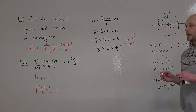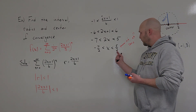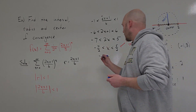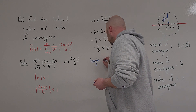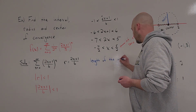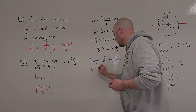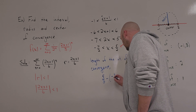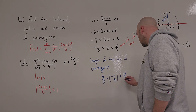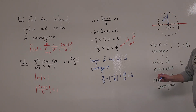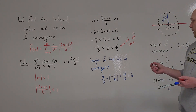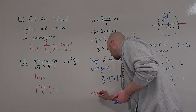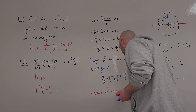Now for the center and radius. The length of the interval of convergence from negative 7 halves to 5 halves is: 5/2 minus (−7/2) = 12/2 = 6. The radius of convergence is half the length, therefore the radius of convergence is 3.